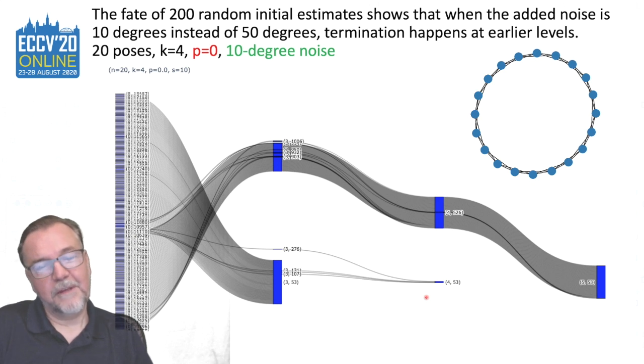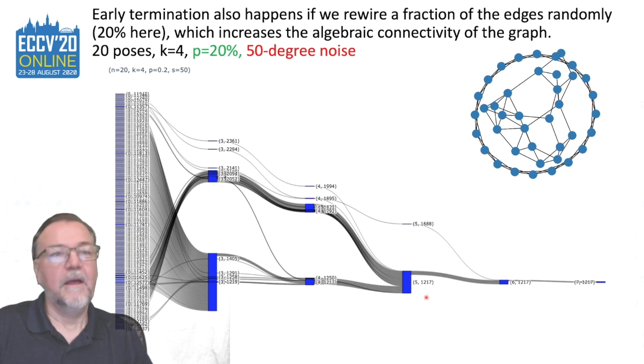Another thing we can do to reduce the level at which we converge is to rewire a fraction of the edges randomly in these small world graphs. This is a procedure due to Watts-Strogatz and in this case we also terminate at lower levels, mostly at level three and many at level five. This is because these edges provide sort of global information throughout the graph. They increase the algebraic connectivity of the graph.